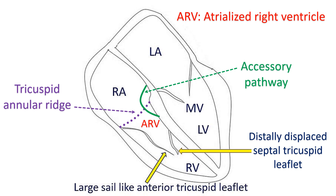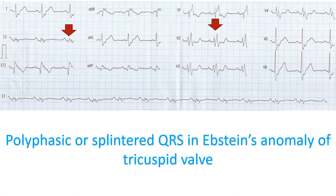Postoperative ECG may show fractionated P waves, indicating areas of slow conduction and scars which can predispose to intra-atrial reentry. While conventional accessory pathways — except those in permanent junctional reciprocating tachycardia (PJRT) — are non-responsive to adenosine, accessory pathways in Epstein's anomaly can respond to adenosine and verapamil.